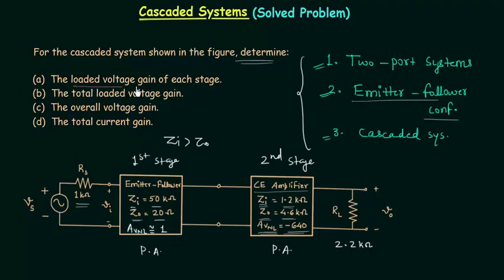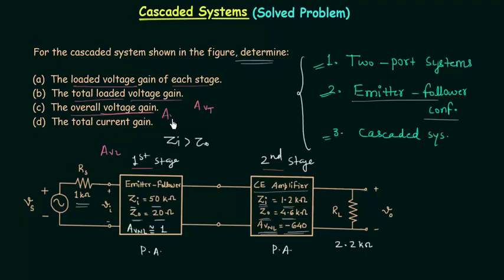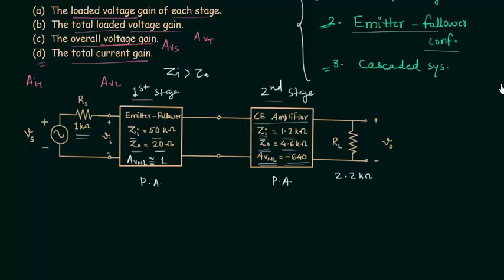Using this information, we need to find the loaded voltage gain of each stage. In part A, we find AVL for the first and second stages. In part B, we calculate the total loaded voltage gain AVT. In part C, we find the overall voltage gain AVS for the entire system. In part D, we calculate the total current gain AIT.